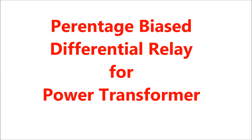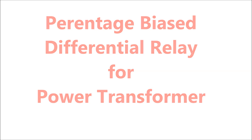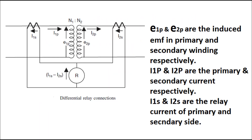Percentage Biased Differential Relay for Power Transformers. To understand the principle of differential relay, an example is taken for a single-phase power transformer. Here N1 is the turn ratio of the transformer. E1p and E2p are the induced EMF in the primary and secondary winding respectively. I1p and I2p are the primary and secondary current respectively. I1s and I2s are the relay currents of the primary and secondary side of the power transformer.